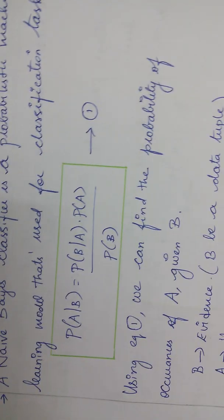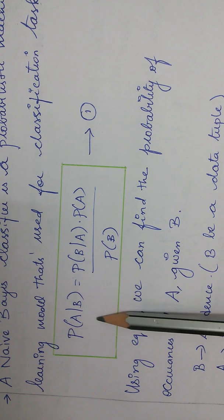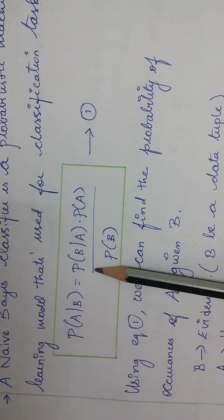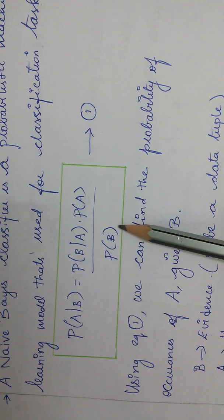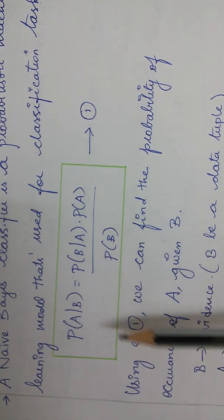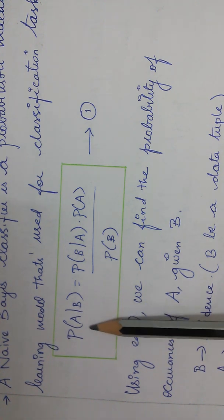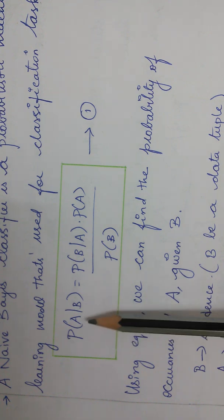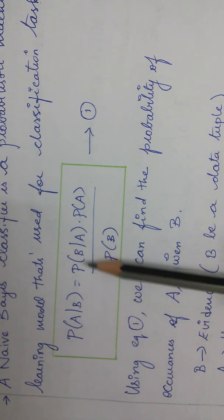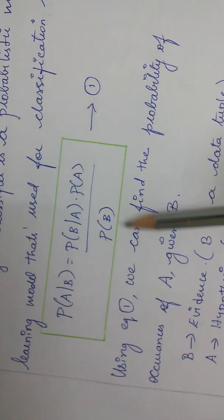So here we are going to see a formula where P of A given B equals P of B given A into P of A divided by P of B. Usually we read it like this, but in Naive Bayes classifier we have to read it like P of A conditioned on B. P is nothing but probability. P of A conditioned on B equals P of B conditioned on A into P of A divided by P of B.